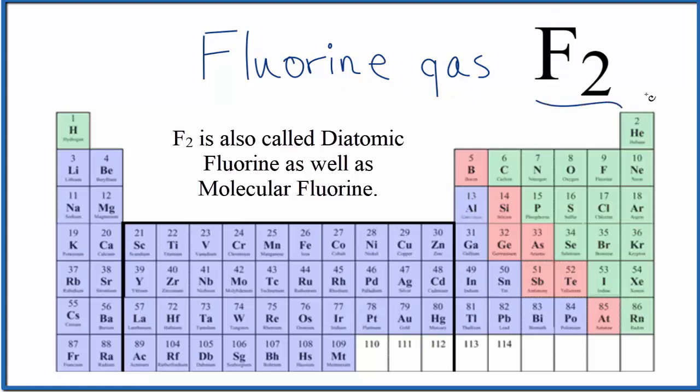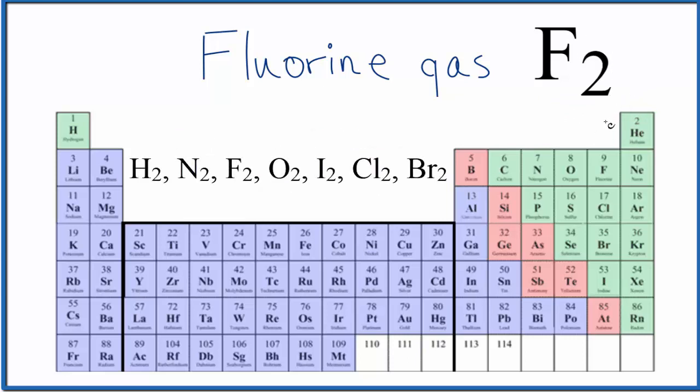Fluorine is a diatomic gas. It's made up of these two fluorine atoms. There are seven diatomic gases you should know: hydrogen, nitrogen, fluorine, oxygen, iodine, chlorine, and bromine. These come up quite often in chemistry.